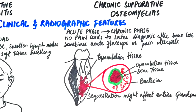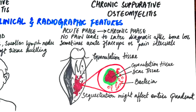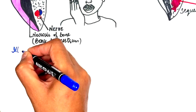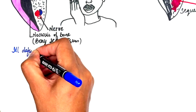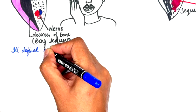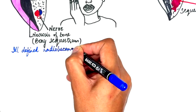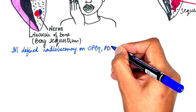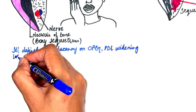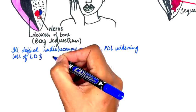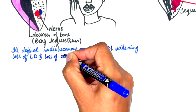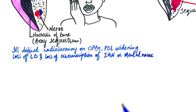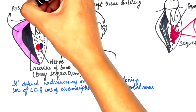Coming to the radiographic features: on a panoramic radiograph, acute suppurative osteomyelitis shows an ill-defined radiolucency of bony destruction, occasionally combined with widening of the periodontal space, loss of the lamina dura, or loss of circumscription of the inferior alveolar canal or mental foramen.